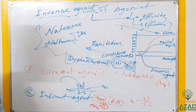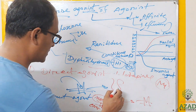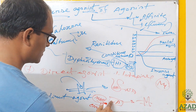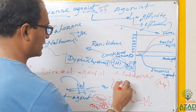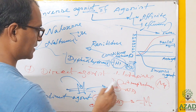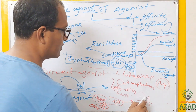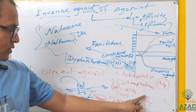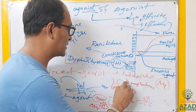Another indirect example: if you take amphetamine, it activates the presynaptic terminal to release more noradrenaline from vesicles. More noradrenaline binds the receptor and gives its function. Amphetamine is not working directly on the receptor; it is just facilitating increased release of noradrenaline — working indirectly.